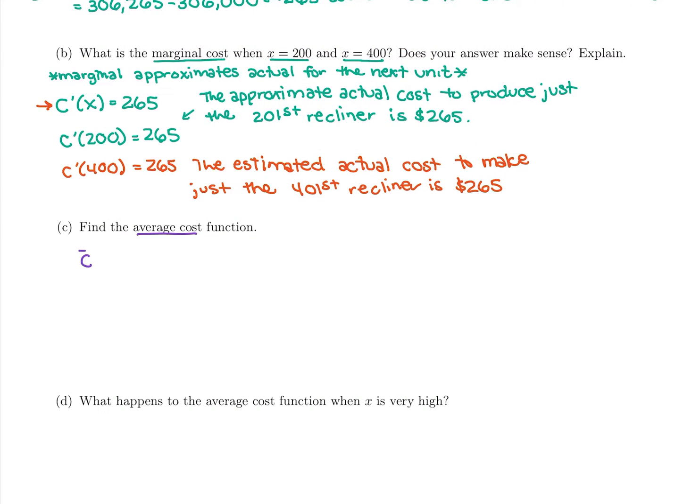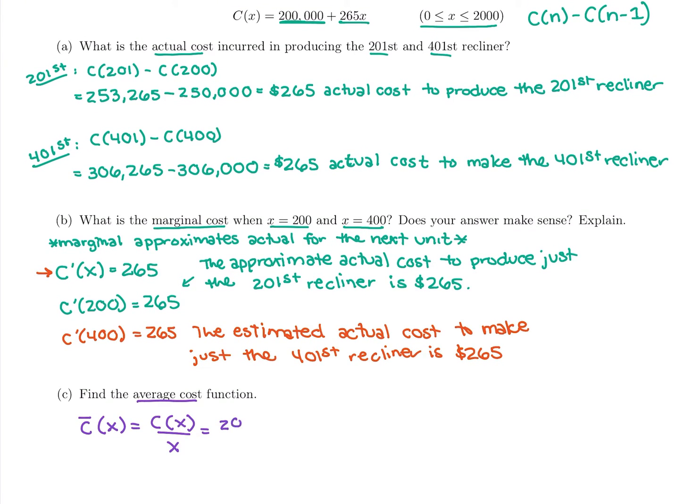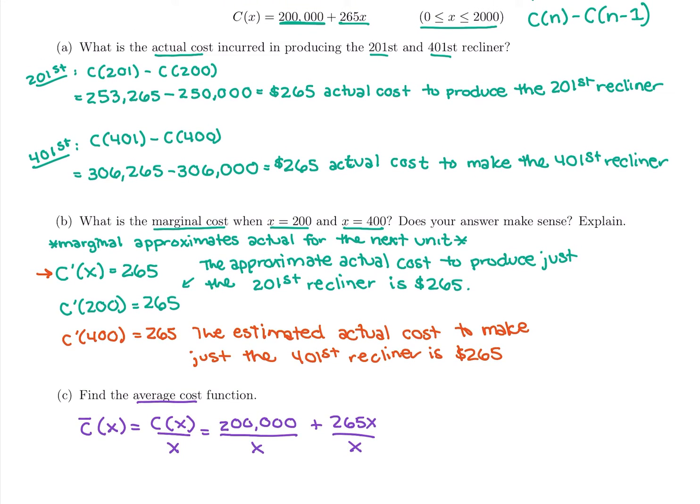Remember average cost has a formula. So first of all, math average we would denote it with a bar on top. We're going to do C̄(x), that means average cost, you want to label it correctly. And then our formula is total cost divided by x. So I'm going to take the total cost from above which is $200,000, divide that by x, plus $265x over x, there's our average cost.